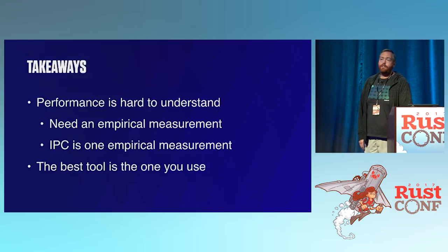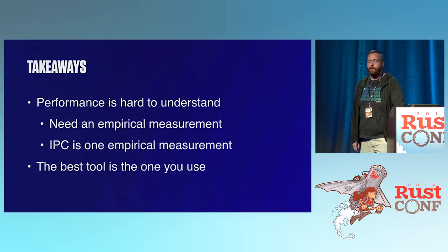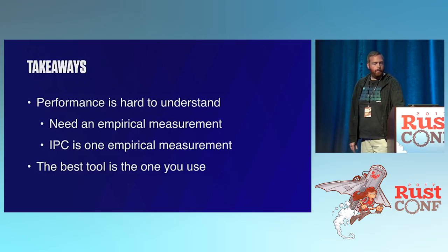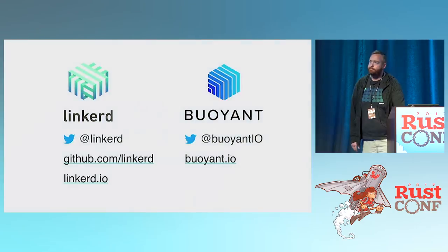Performance is hard to understand given how complex CPUs are — you really need to measure it empirically, run your program and see how it does. There are a lot of great tools: IPC is a really great measurement to use. I've been pleased at how many tools there are — Instruments on the Mac is much more powerful than people realize, Perf on Linux, VTune — but ultimately the best tool is the one you use on a regular basis. And I want to give a special shout-out to Eliza for walking me through Instruments. Thanks for listening.